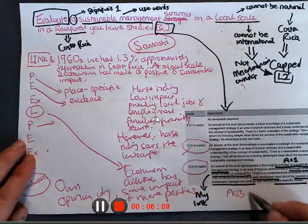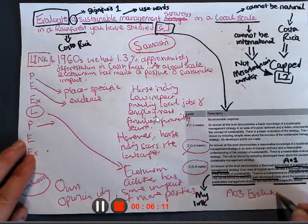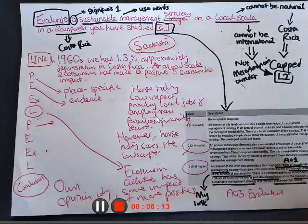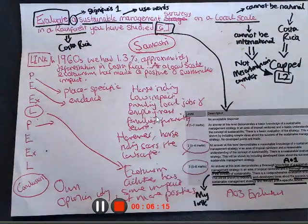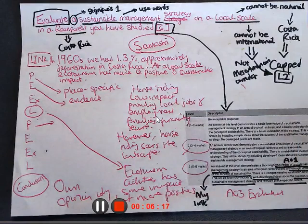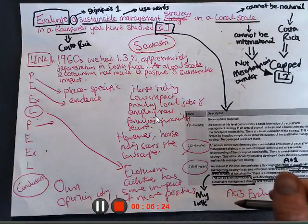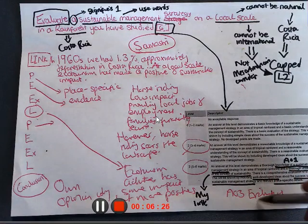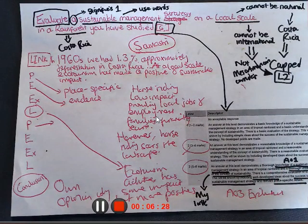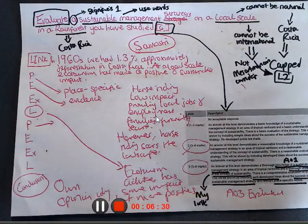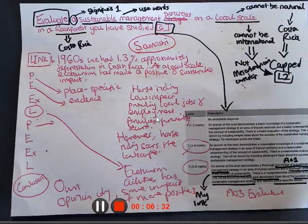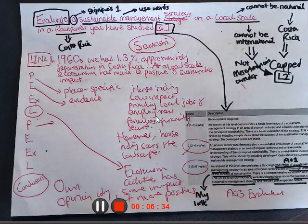And your AO3 skill of evaluation shows that you have learnt the knowledge. You have applied it to this question because you wrote on a local scale. And you are giving your own opinion of whether it is successful or not. But the examiner is not judging you on what your evaluation is. They're judging you on your ability, your skill to access higher order thinking skills and being able to evaluate.